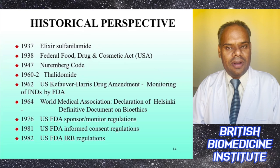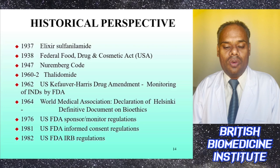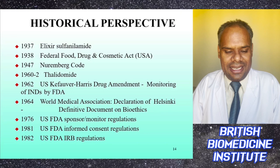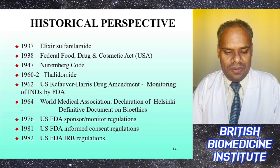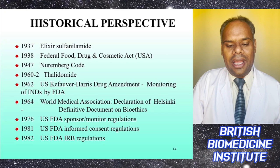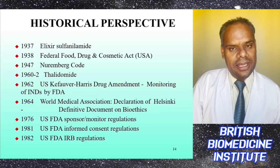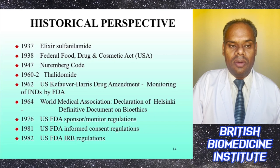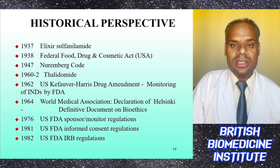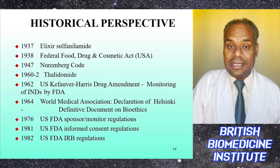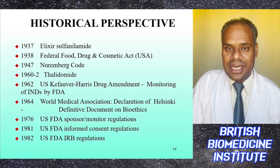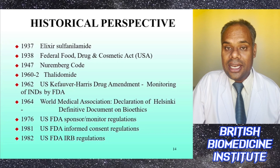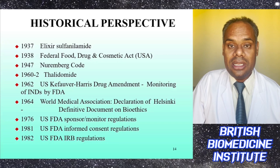Key dates in the history of clinical trials: 1937 — elixir sulfonamide tragedy; 1938 — formation of the US FDA; 1947 — Nuremberg Code; 1960-62 — thalidomide tragedy; 1962 — Kefauver-Harris Drug Amendment and monitoring of INDs by the FDA; 1964 — Declaration of Helsinki by the WMA; 1976 — FDA monitor regulations; 1981 — FDA informed consent regulations; 1982 — FDA Institutional Review Board regulations.